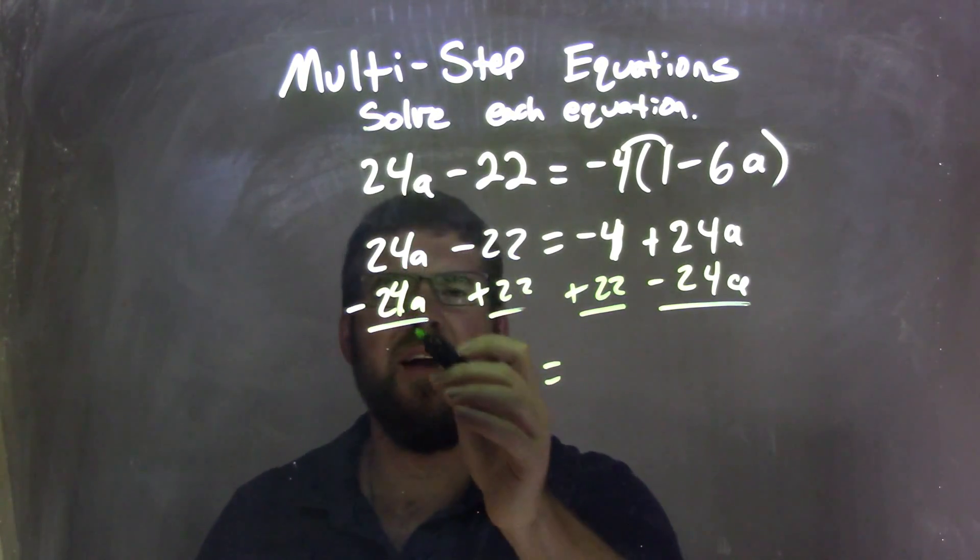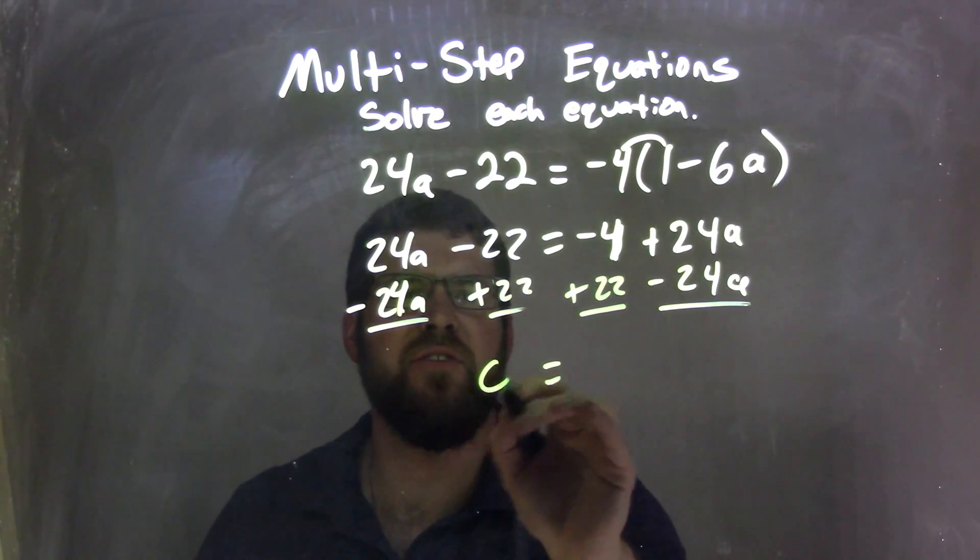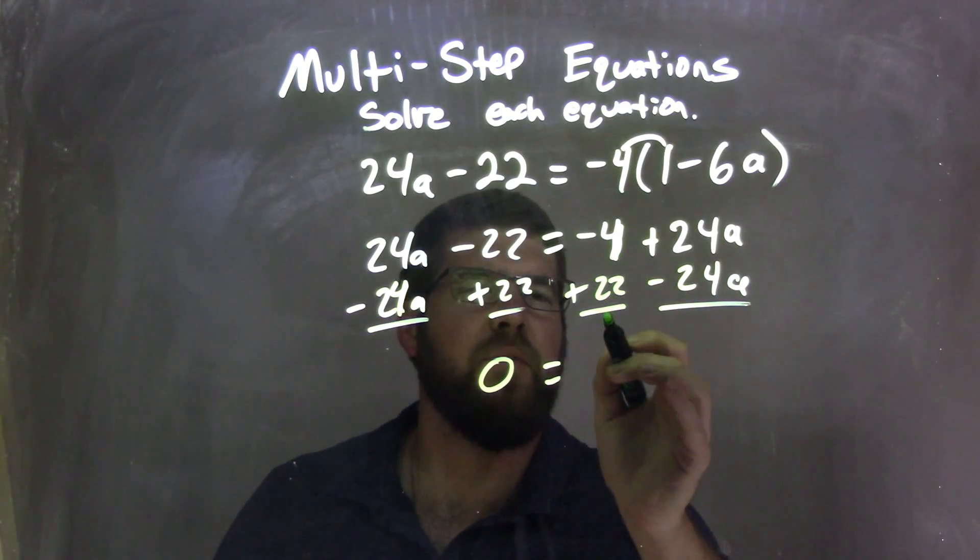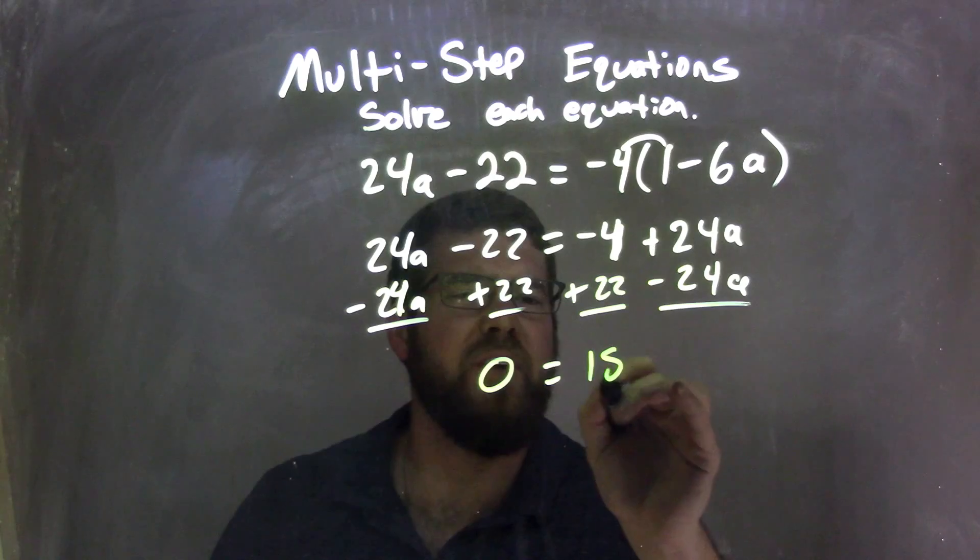On the left, well, 24a minus 24a is just 0. Okay? They cancel out. I have negative 4 plus 22 is positive 18.